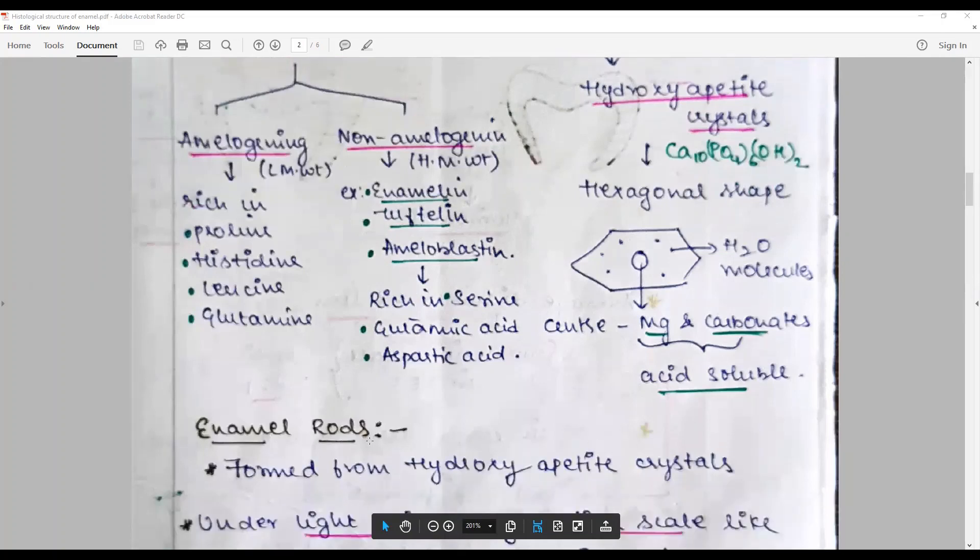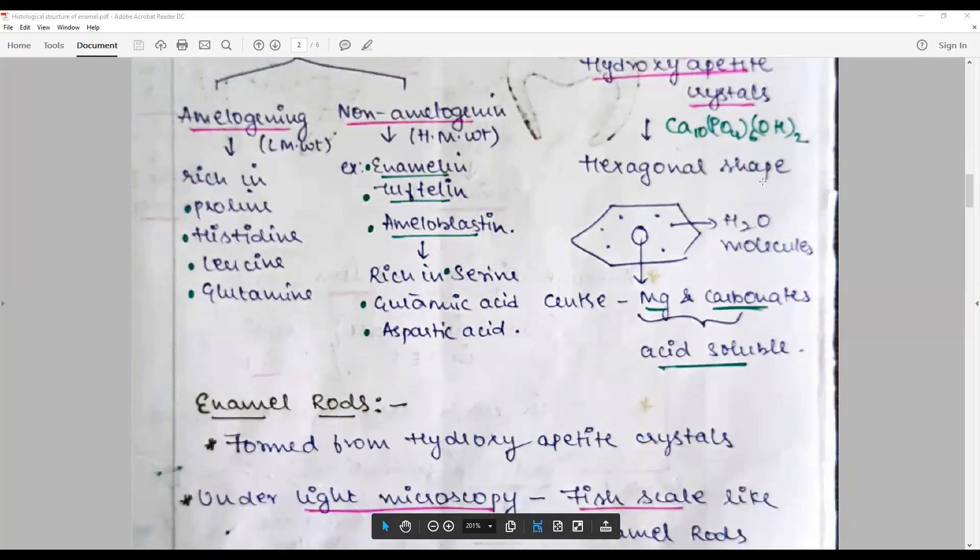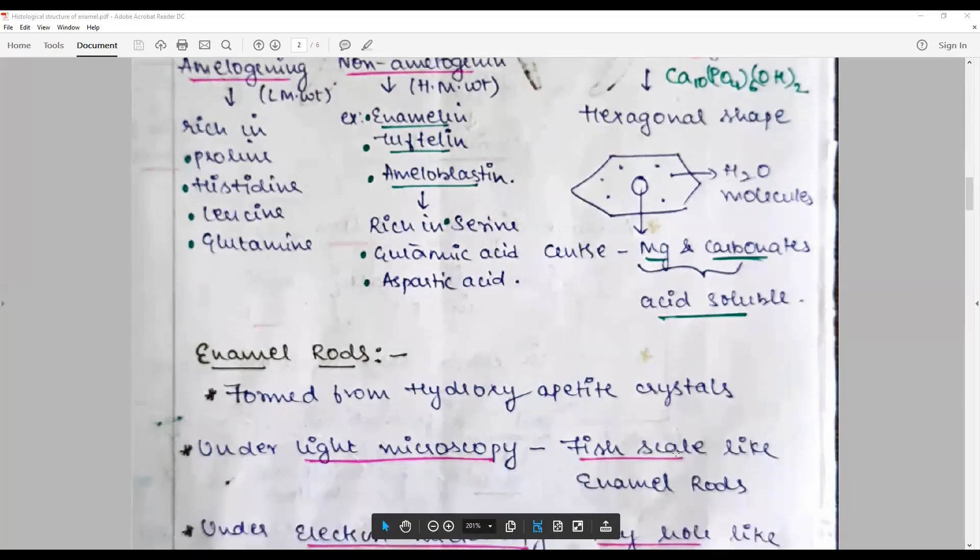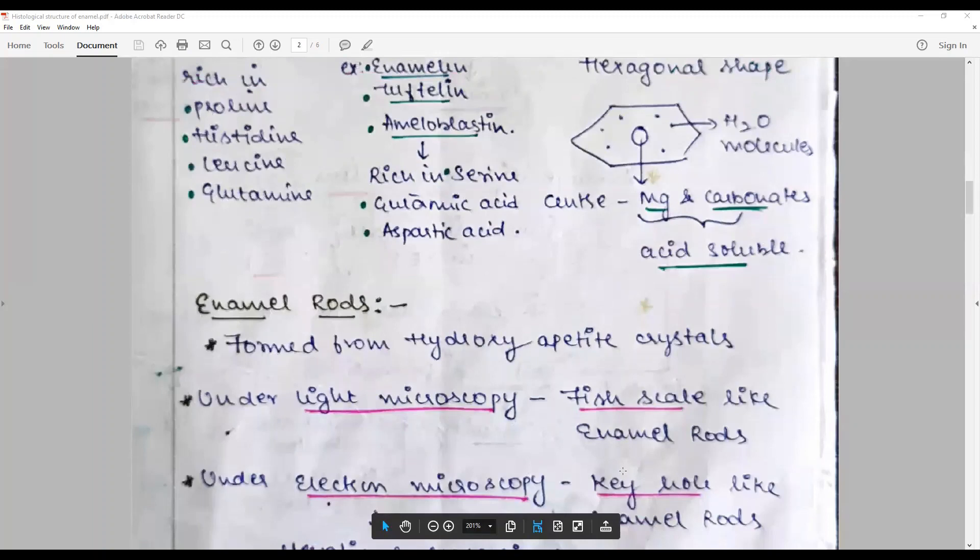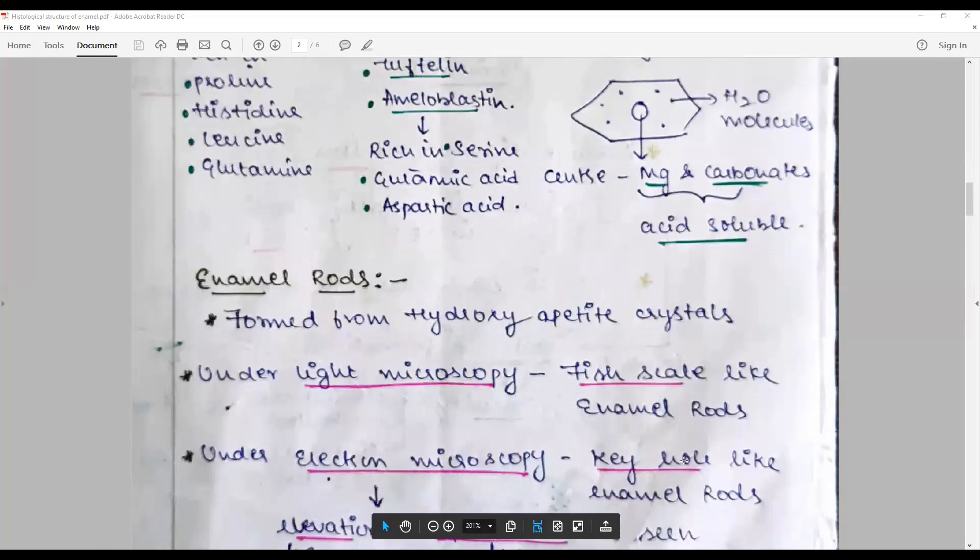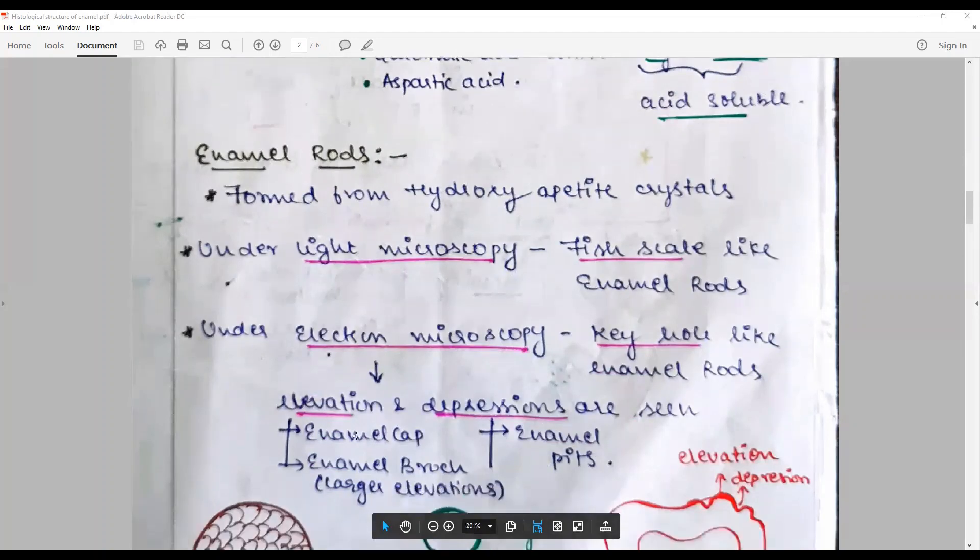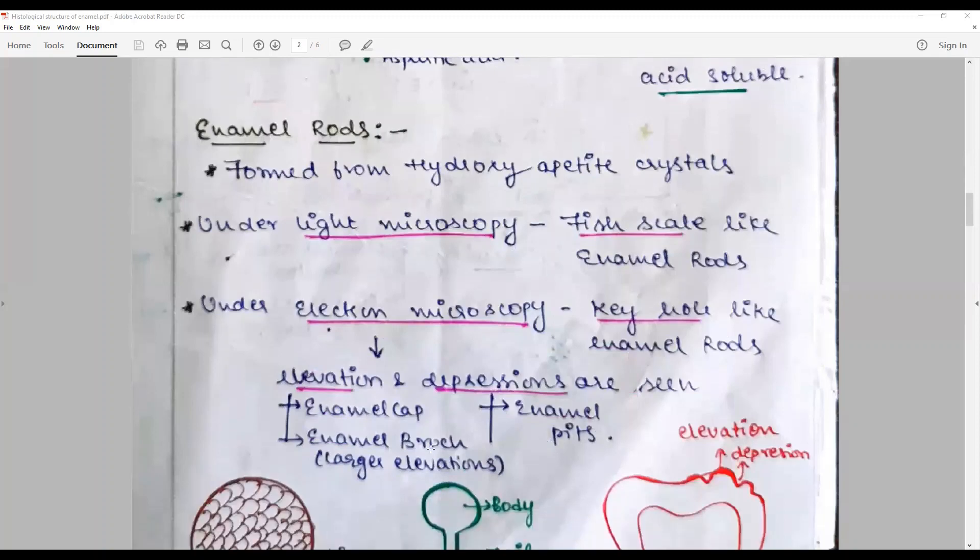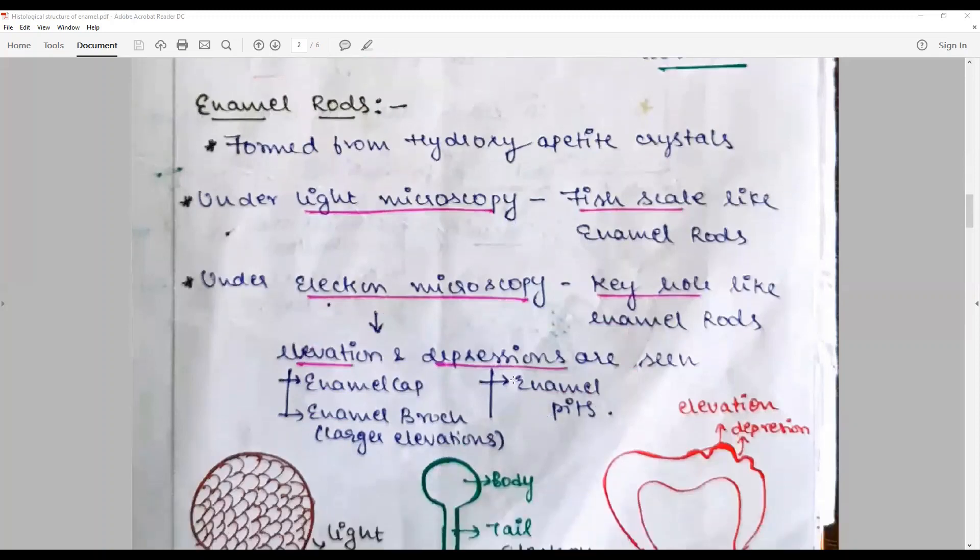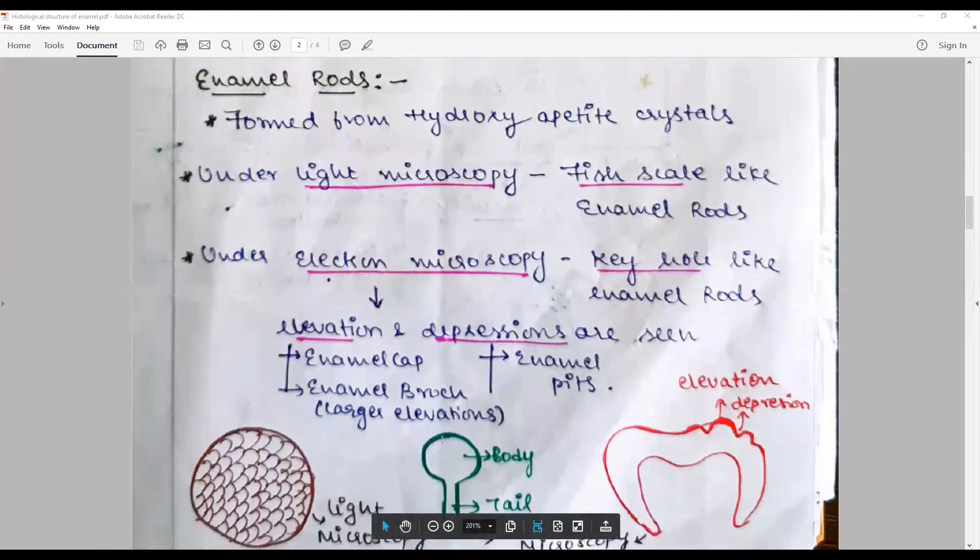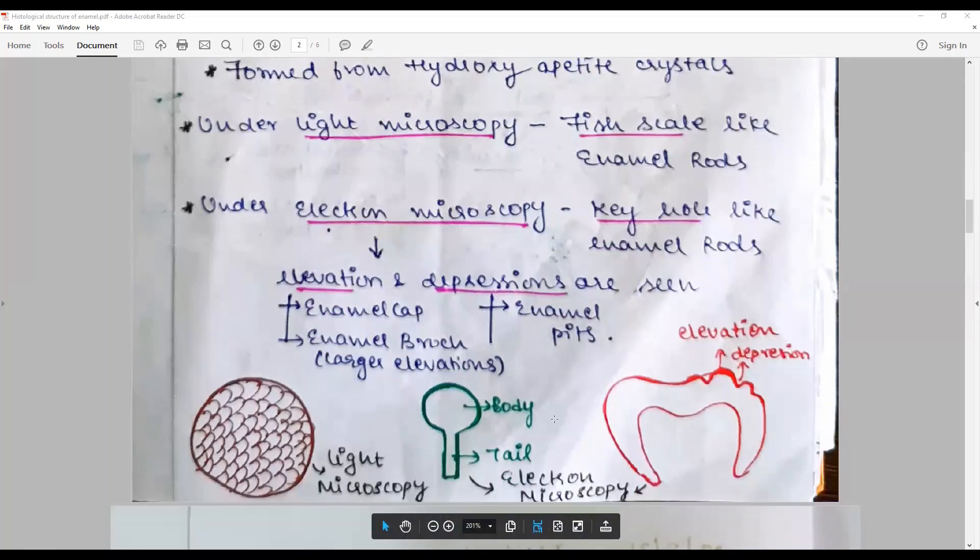The enamel rods are formed from hydroxyapatite crystals. Remember the structure is hexagonal shape. Under light microscopy they appear as fish scale, whereas under electron microscopy they have a classic keyhole-like enamel rods. Under electron microscopy you see elevations and depressions. Elevations are representing the enamel cap or enamel head, larger elevations. Depressions are named as enamel pit. Give a diagram - elevations, depressions. Elevations are rods, depressions are the center of the rods.